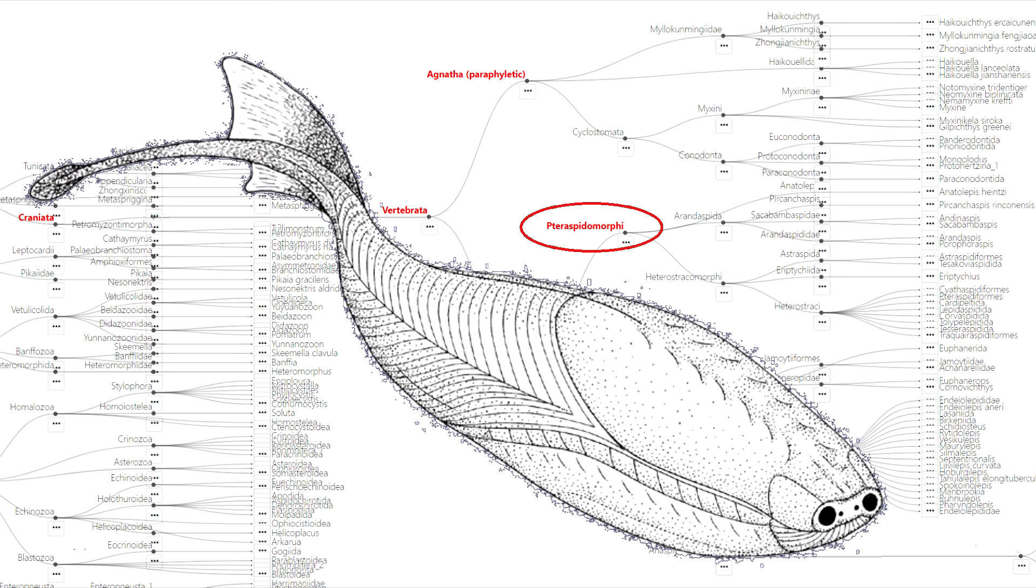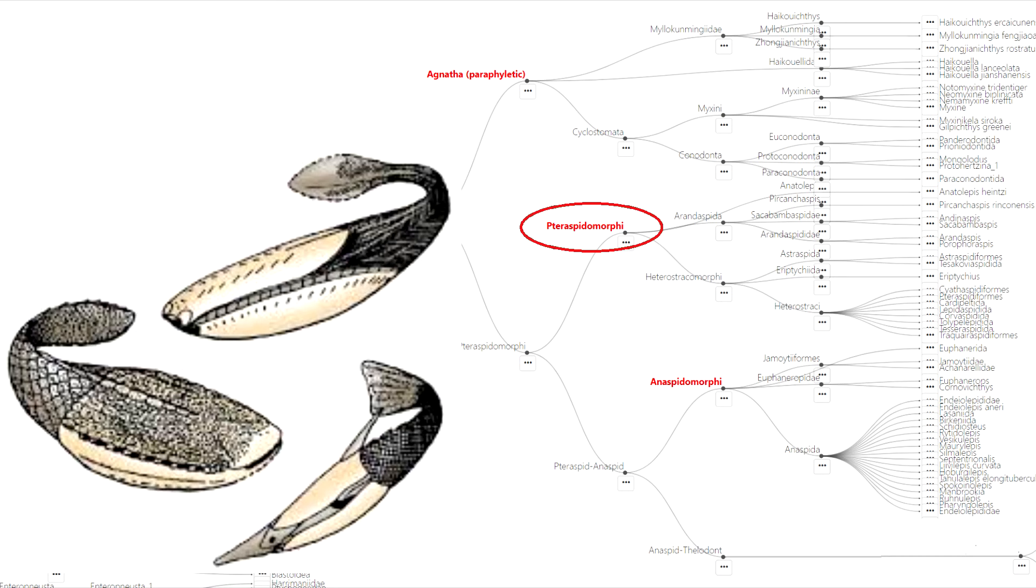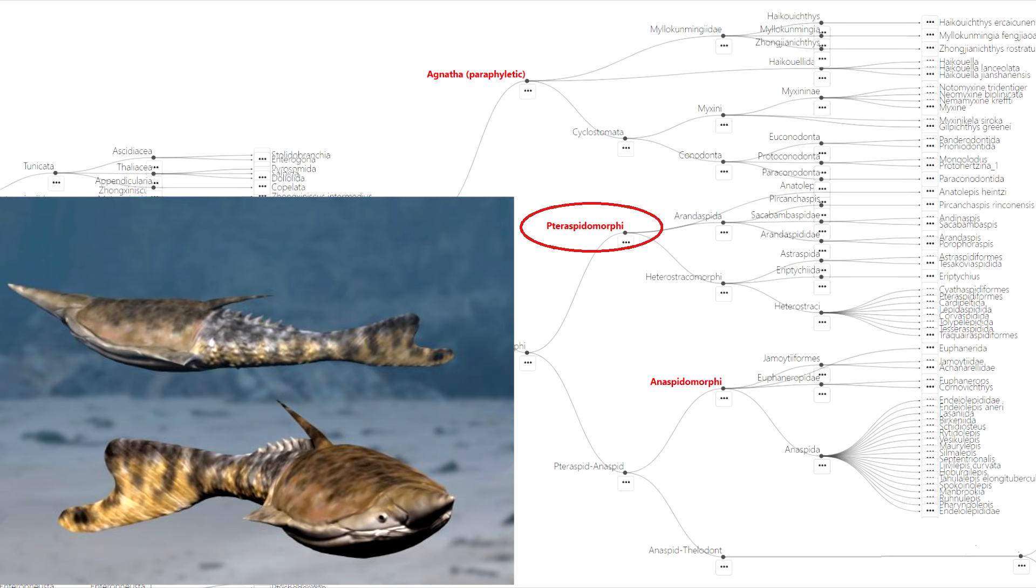Terraspidomorphs are descendants of these earliest agnathans, but with paired nostrils as opposed to the one nasal hypophysial opening in some of their sister species. They appeared in the Ordovician period around 470 million years ago. This was a time when there was plenty of oxygen in the water, but not quite enough yet in the air for people to breathe normally.